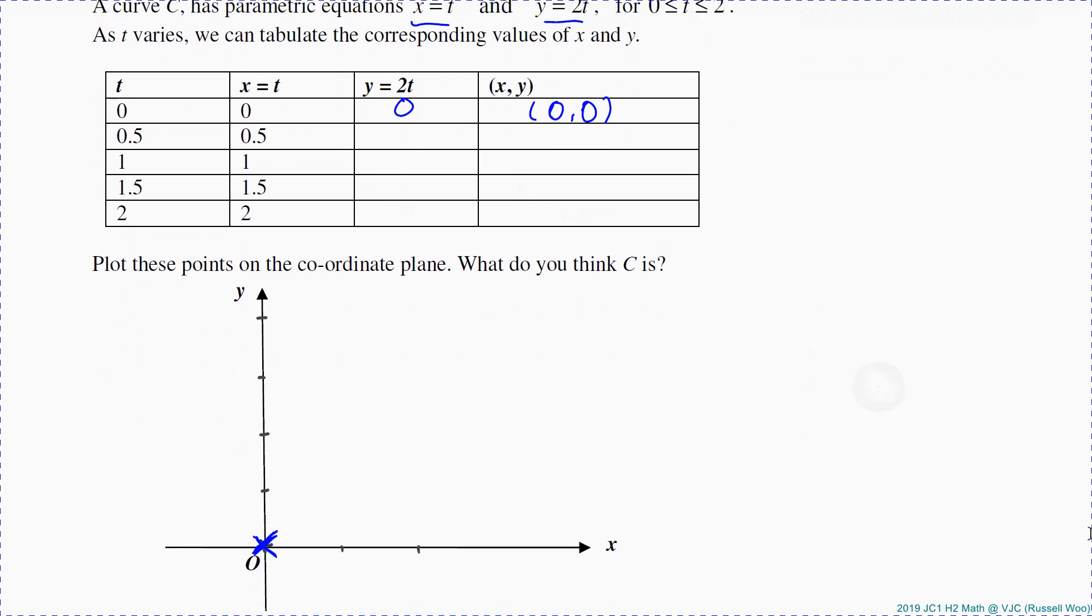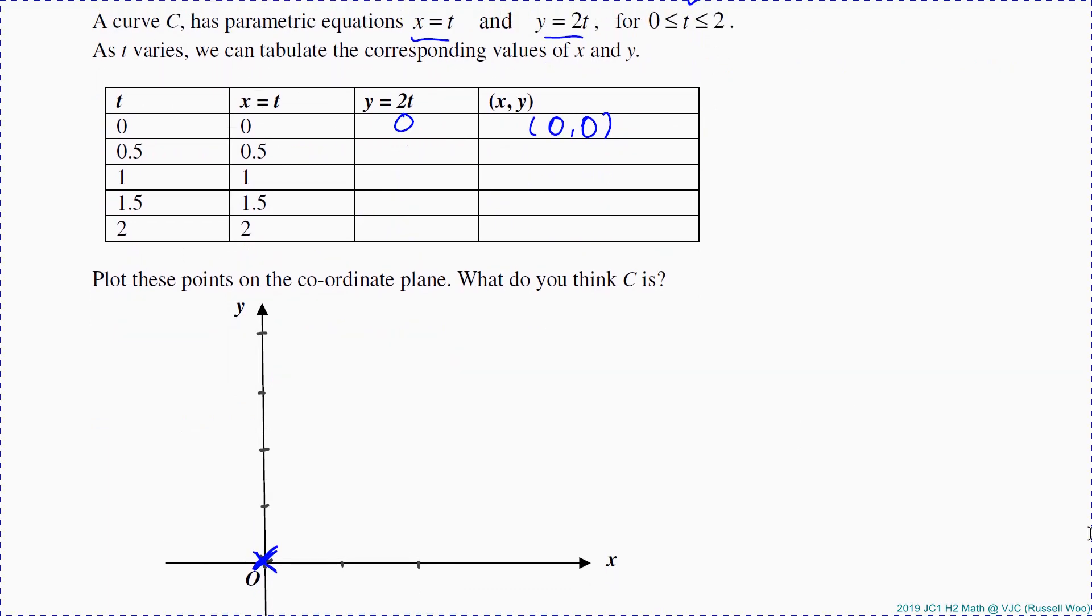If I substitute t is 0.5, I get x is 0.5, y equals to 1, which means (0.5, 1) is a point on the curve.